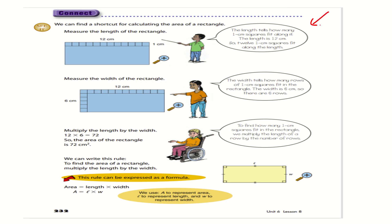As stated above, we can find a shortcut for calculating the area of a rectangle. We could make squares of one centimeter, and here what I'm doing instead is counting: one, two, three, four, five, six, seven, eight, nine, ten, eleven, twelve. So what they've said is the length is 12 centimeters — there are 12 squares that make up that length. The length tells how many one-centimeter squares fit along it.